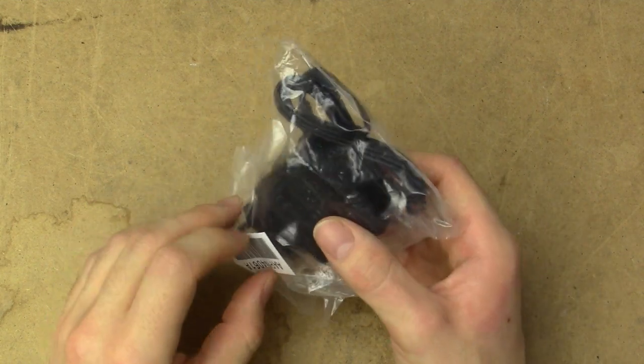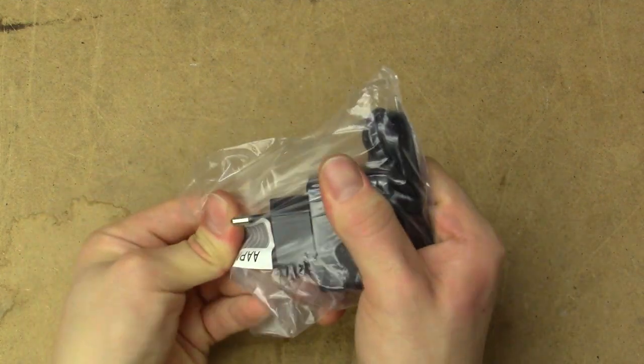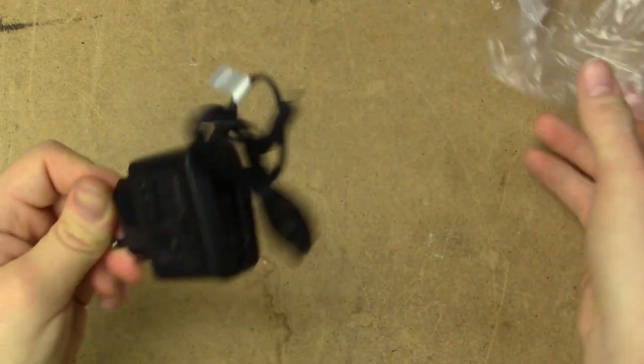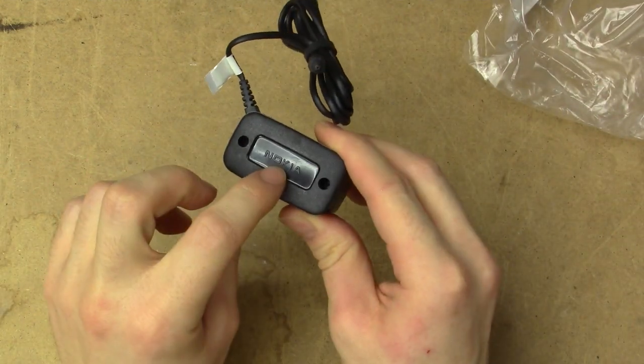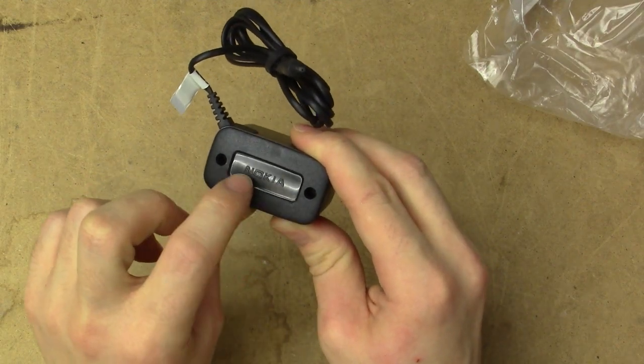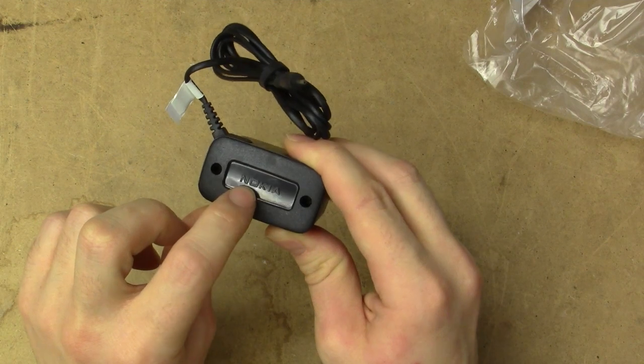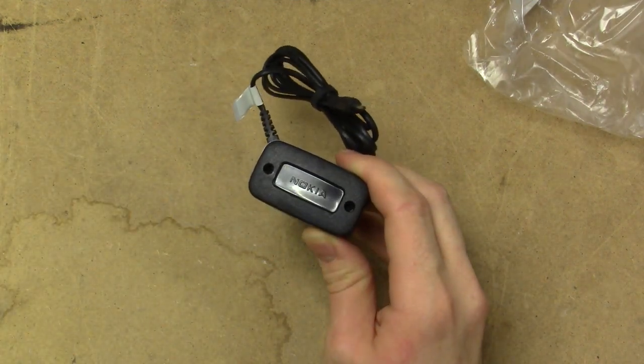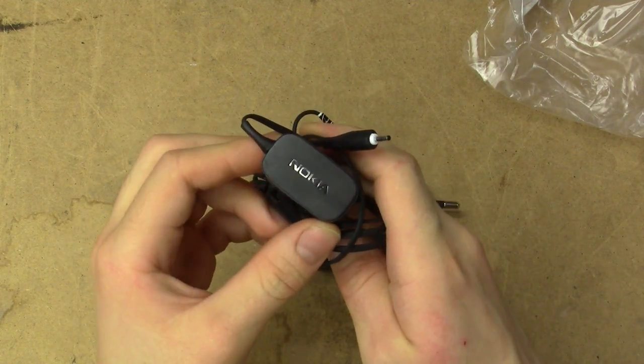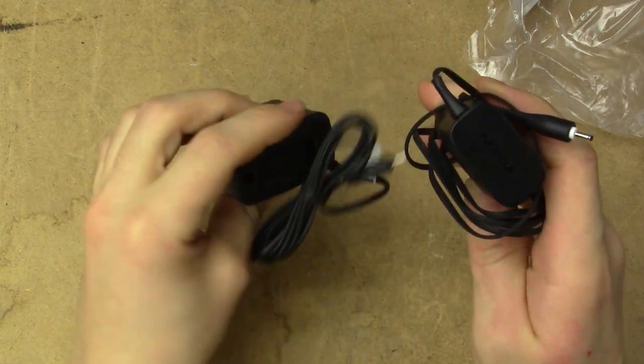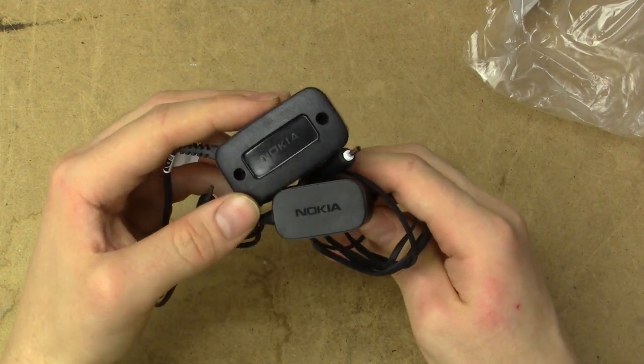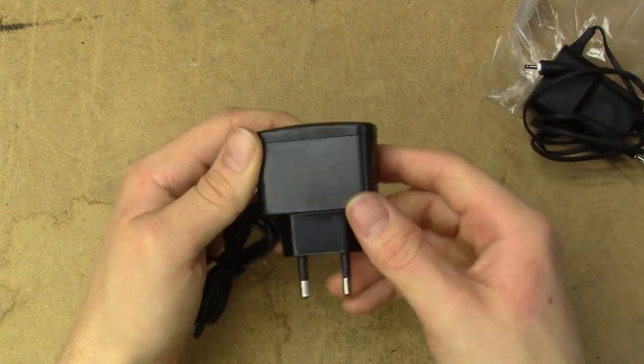This one seems to be doing a slightly better job than the last one at appearing genuine. It doesn't have the obviously fake Nokia logo, this one actually looks kind of okay, but the font is still wrong. We can compare it to my genuine newer model one there. The Nokia logo is supposed to be bold, it isn't on this one, so I'm quite certain it's a fake.